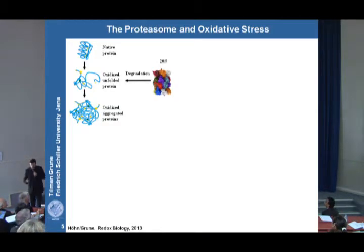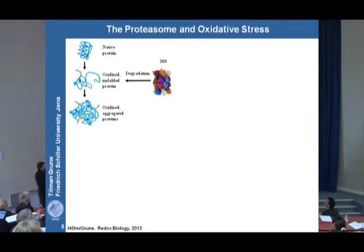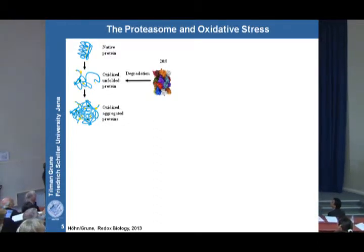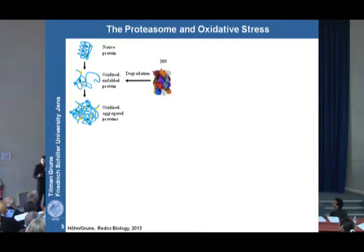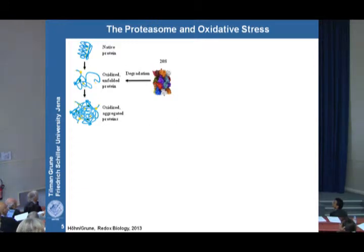What I want to talk about today is that normally the proteasome degrades oxidized and unfolded proteins, but it's always degrading monomers — no aggregates, no aggregated proteins are degraded by the proteasome. So what happens to these protein aggregates?